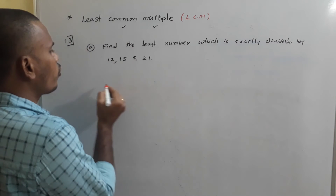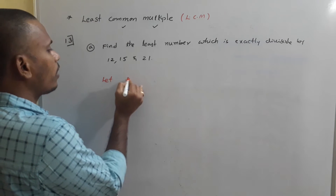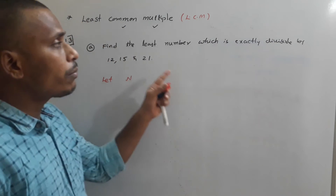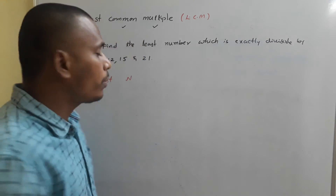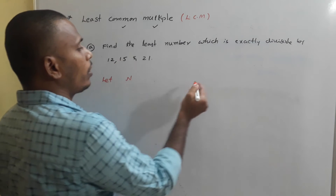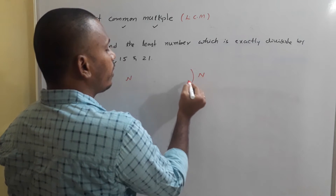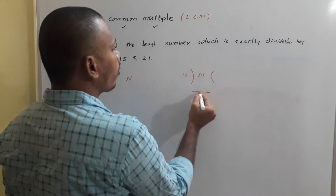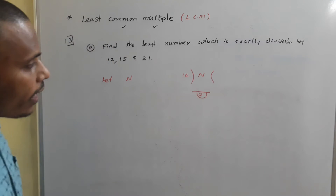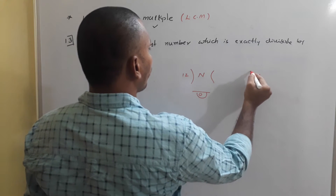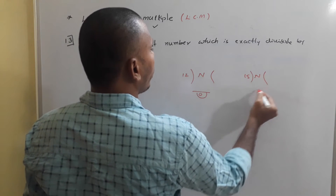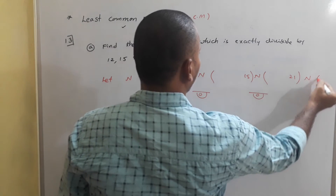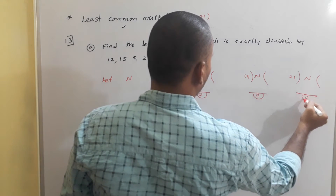Let the required number be N. As per the problem, N is divisible by 12, so when you divide N by 12 it leaves a remainder of 0. Similarly, when you divide N by 15 it leaves a remainder of 0, and when you divide N by 21 it leaves a remainder of 0.